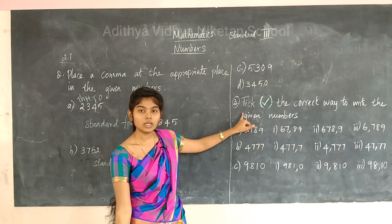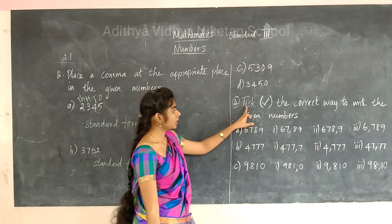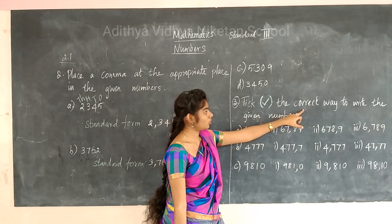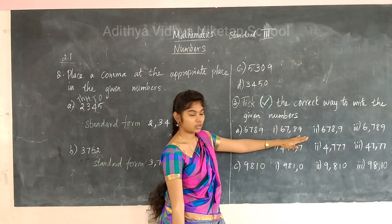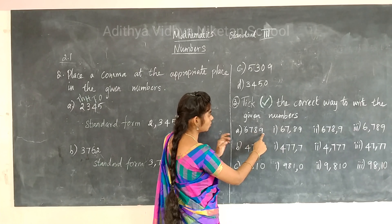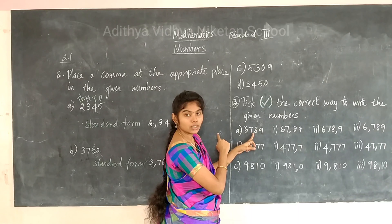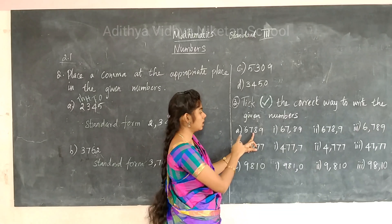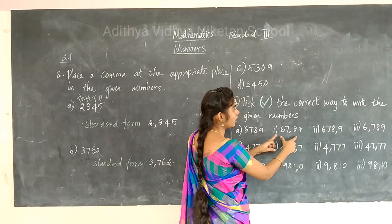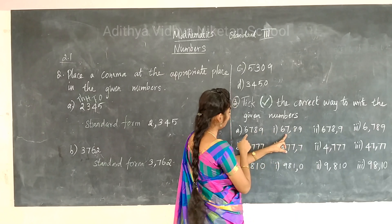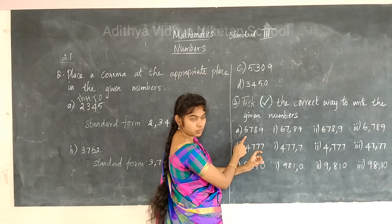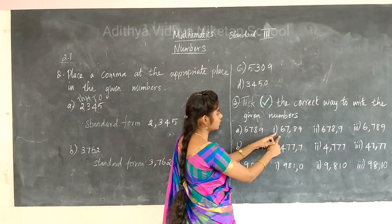Third sum: pick the correct way to write the given number — you are going to tick the correct option. The first number is 6,782. We just saw where to place the comma — in between hundreds and thousands. So let's check the first option.